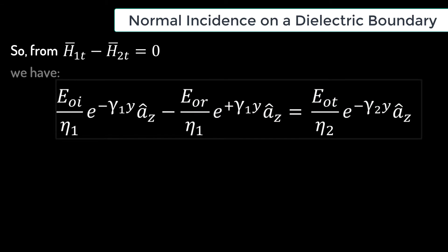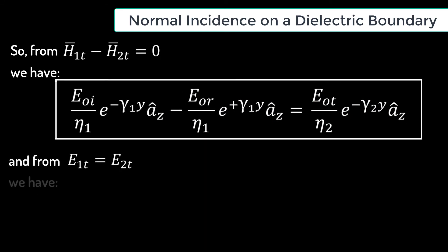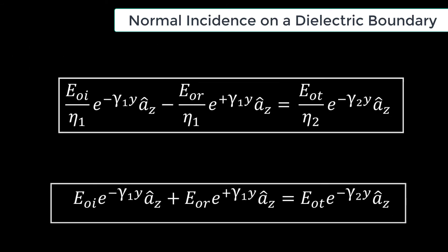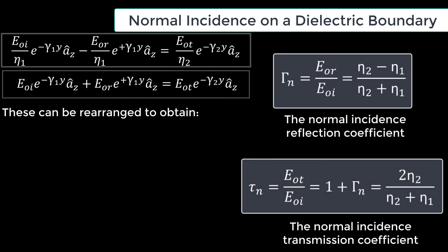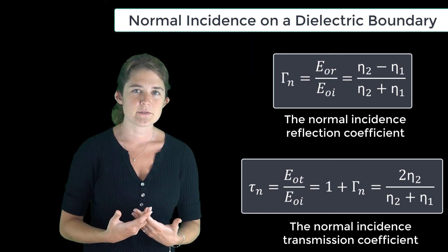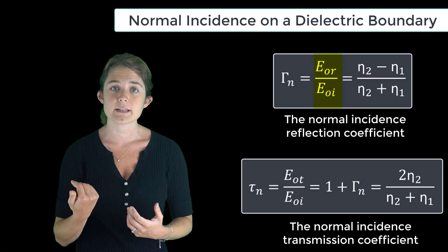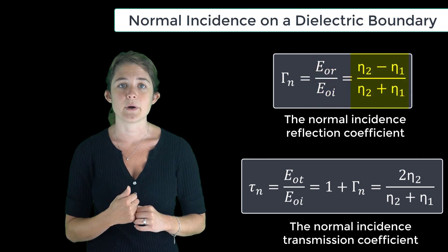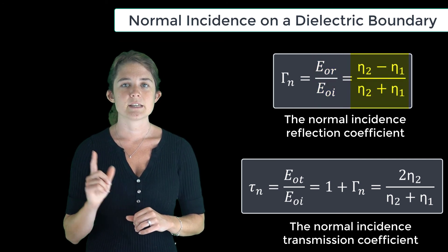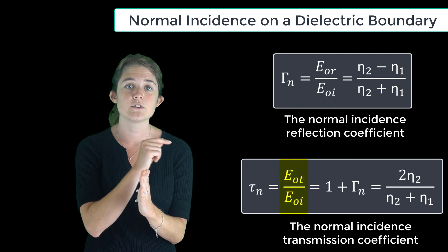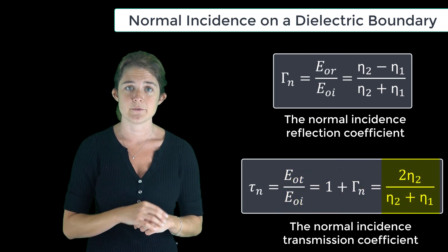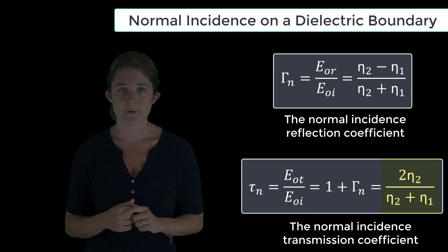These two equations can be rearranged to obtain the reflection and transmission coefficients for this normal incidence scenario. The reflection coefficient is defined as the ratio of the magnitude of the reflected electric field to the magnitude of the incident electric field, and it works out to (eta 2 minus eta 1) over (eta 2 plus eta 1). Similarly, the transmission coefficient is defined as the ratio of the transmitted to incident electric field magnitudes, and it works out to 2 * eta 2 over (eta 2 plus eta 1).